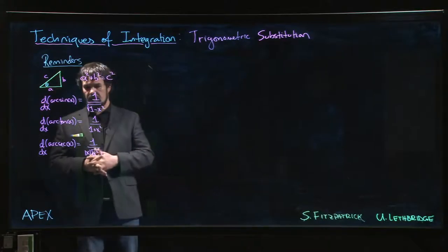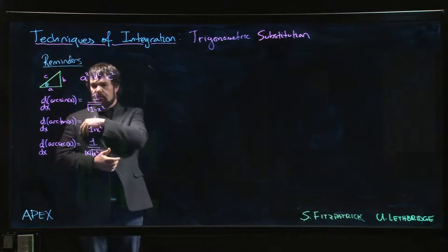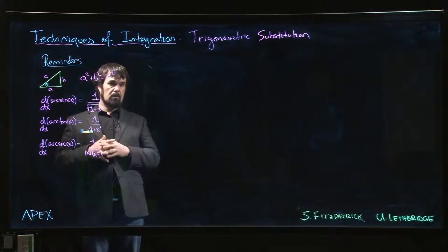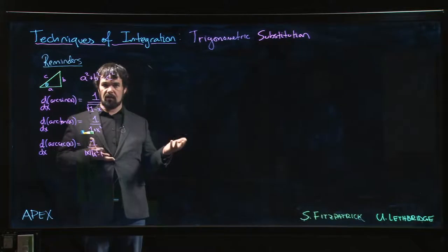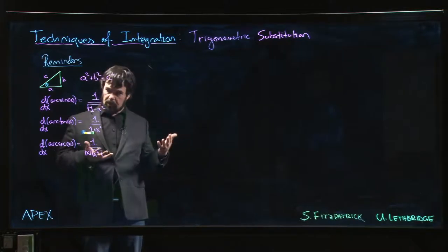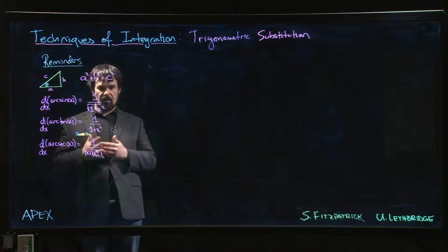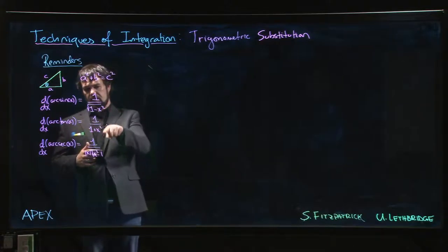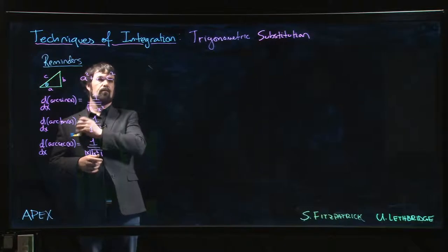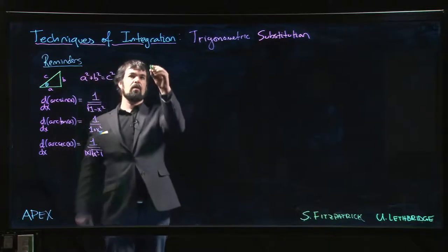The idea is that if we make a substitution like x equals sine theta, which is what we're going to do, that's really like saying theta is arc sine x. So based on these three derivatives there are three patterns that we look for.